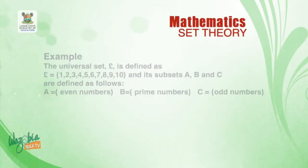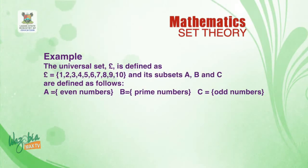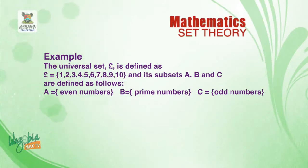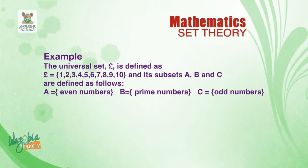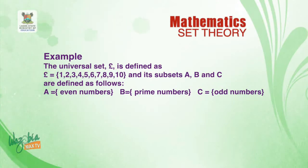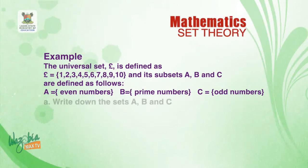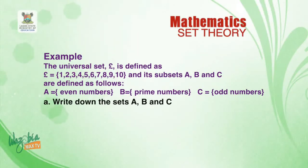Welcome back. I'll now take a question that encompasses all the aforementioned notations. The universal set is defined as ε = {1, 2, 3, 4, 5, 6, 7, 8, 9, 10} and its subsets A, B, and C are defined as follows: A equals even numbers, B equals prime numbers, and C equals odd numbers. Part (a) says: write down the sets A, B, and C.